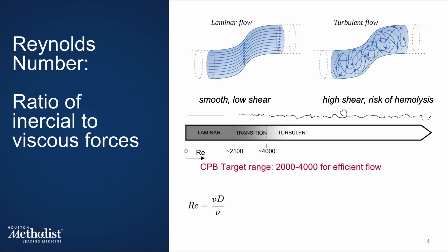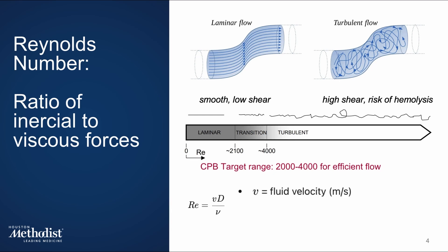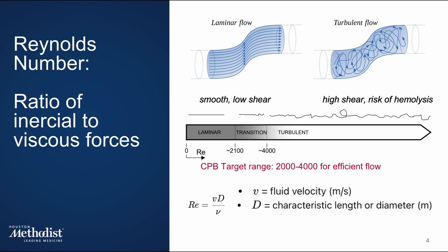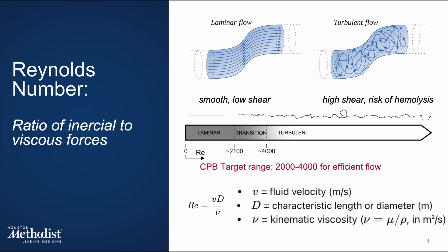How do we calculate it? The formula is velocity multiplied by diameter, divided by kinematic viscosity. And because blood viscosity changes with temperature, we must consider the patient's temperature during bypass. Cooler blood is thicker, which affects flow resistance, so it's always part of our consideration.